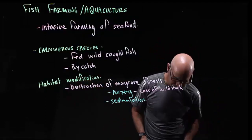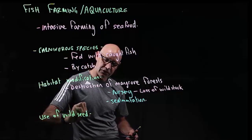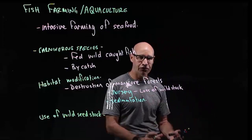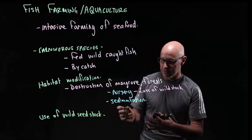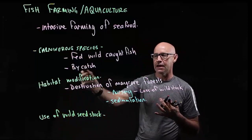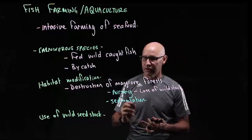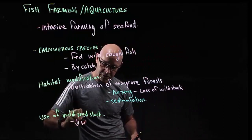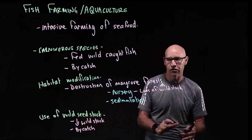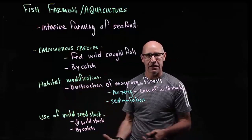Another impact is the use of wild seed stock. Many aquaculture farms are actually stocked with wild-caught fish. This reduces wild numbers and also generates bycatch. So when wild fish are caught to stock the aquaculture ponds, there is bycatch, and again that's wasted.